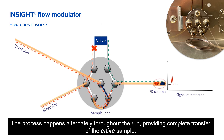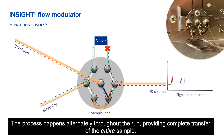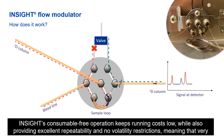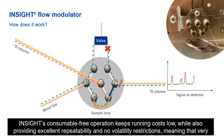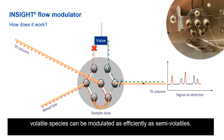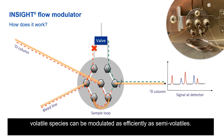This process happens alternately throughout the run, providing complete transfer of the entire sample. InSight's consumable-free operation keeps running costs low, while also providing excellent repeatability and no volatility restrictions, meaning that very volatile species can be modulated as efficiently as semi-volatiles.